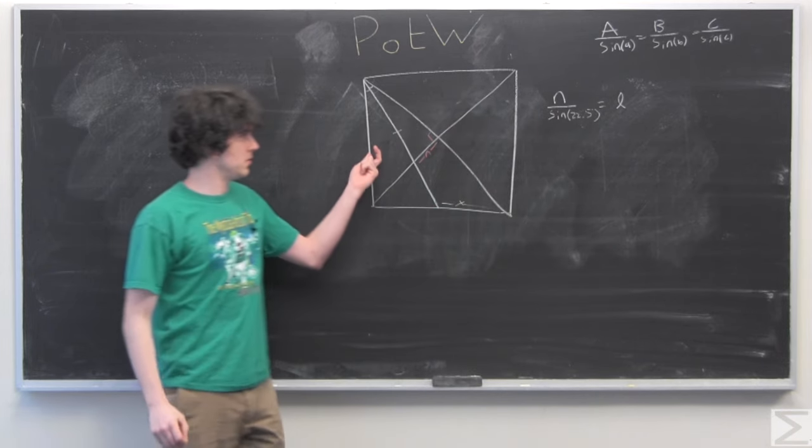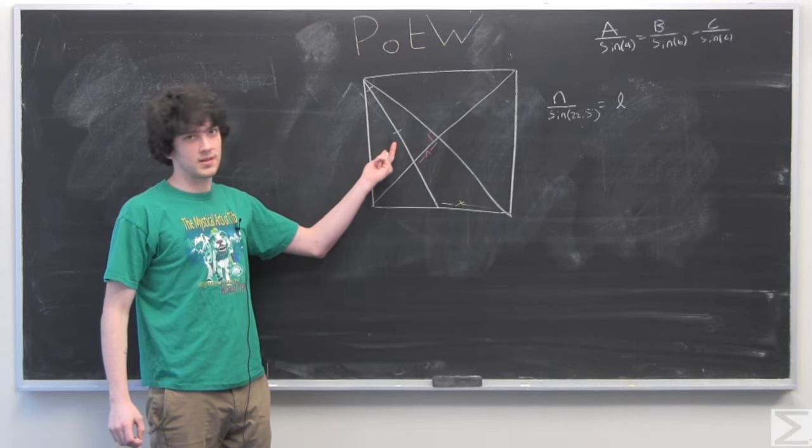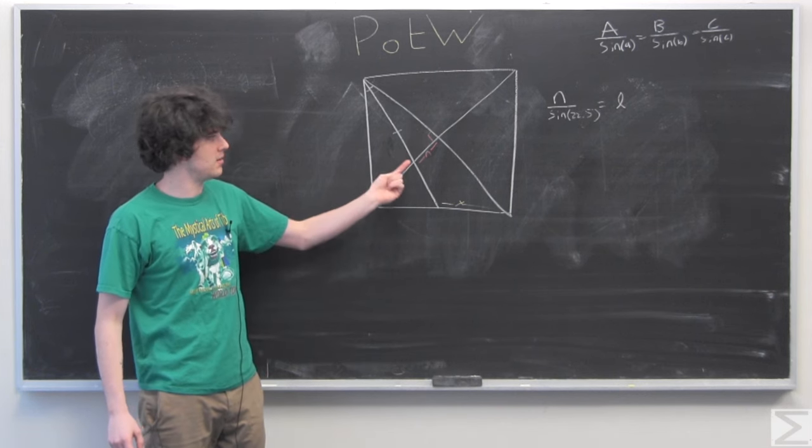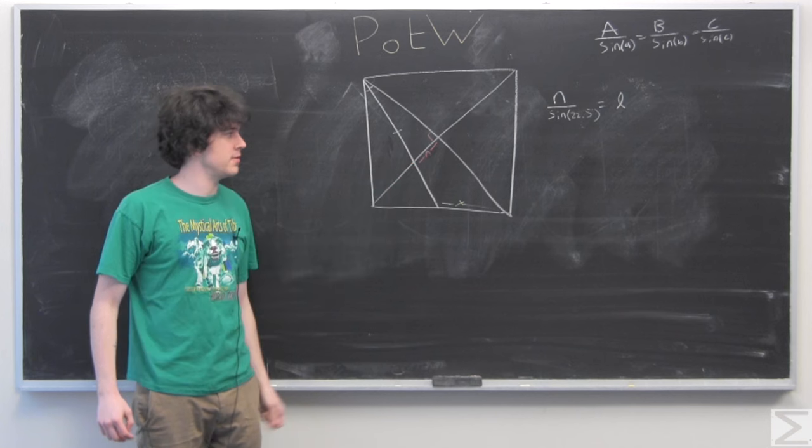And for now, we will call this length L. And since the sine of 90 degrees is 1, we have N over sine of 22.5 equals L.